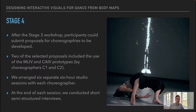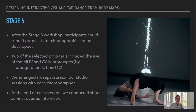Stage 4. After the stage 3 workshop, participants could submit proposals for choreographies to be developed. Two of the selected proposals included the use of the MLIV and CAIV prototypes by choreographers C1 and C2. We arranged six separate six-hour studio sessions with each choreographer. At the end of each session, we conducted short semi-structured interviews.